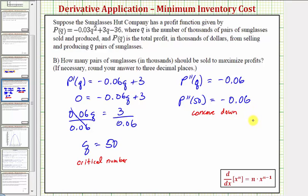So if the function is concave down, it would look something like this. And therefore at this critical number, Q equals 50, we do have a high point or a maximum function value. Which means 50, not just 50, but 50,000 pairs of sunglasses should be sold to maximize profits.